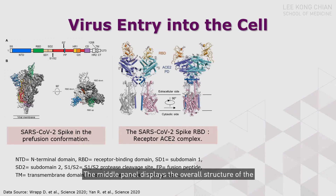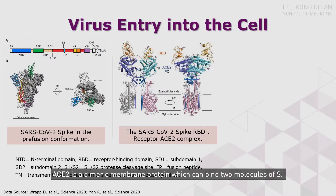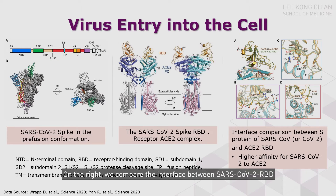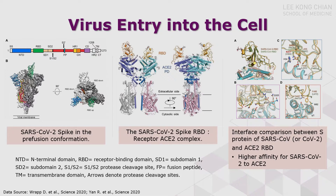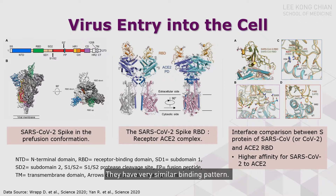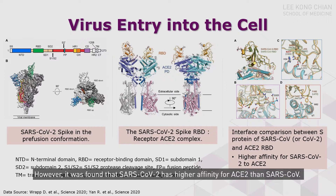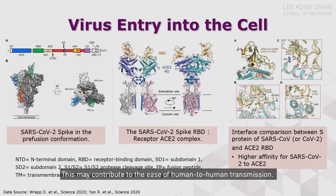The middle panel displays the overall structure of the S-RBD domain in orange binding to the ACE2 receptor. ACE2 receptor is a dimeric membrane protein, which can bind two molecules of S. On the right, we compare the binding interface between SARS-CoV-2 RBD and SARS-CoV RBD with ACE2. They have very similar binding patterns; however, it was found that SARS-CoV-2 has higher affinity for ACE2 than SARS-CoV. This may contribute to the ease of human-to-human transmission.